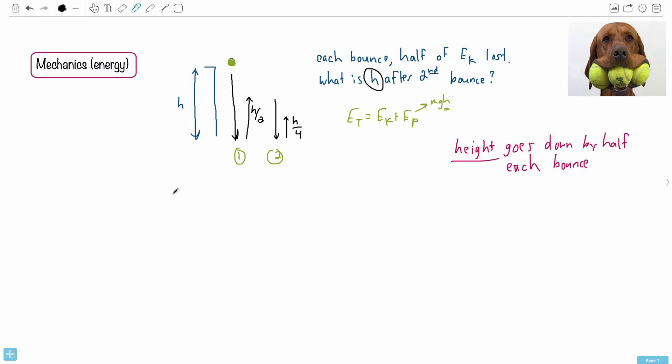So in this case, the choice is choice B. The answer is just H over 4. That's all we had to do. Not so bad.